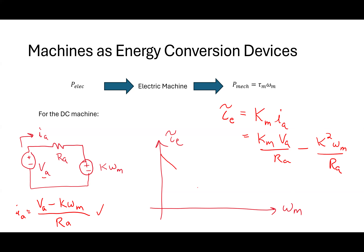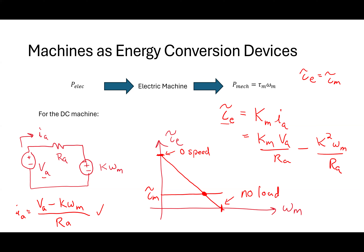It's going to be linear, going down. This basically is the no-load condition out here; this would be my maximum torque at zero speed — we call that the stall torque. In steady state, the electrical torque and the mechanical torque have to be equal to each other. If he's moving at constant speed, that has to be true. Where the mechanical torque intersects this curve is where this thing operates.